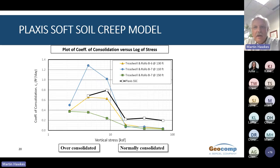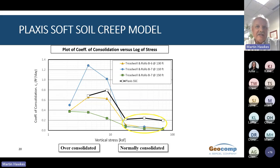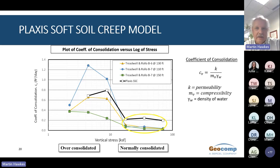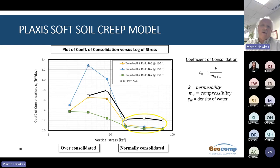However, the Plaxis model over-predicts the coefficient of consolidation for normally consolidated stress levels, meaning it will dissipate pore pressures more rapidly than the laboratory measured response. We can adjust the model to account for this. The coefficient of consolidation is proportional to the ratio of permeability over compressibility. To better estimate the rate of consolidation, the permeability of the Old Bay clay can be made dependent on void ratio. As the void ratio decreases during consolidation, the permeability will decrease and hence the coefficient of consolidation will decrease.